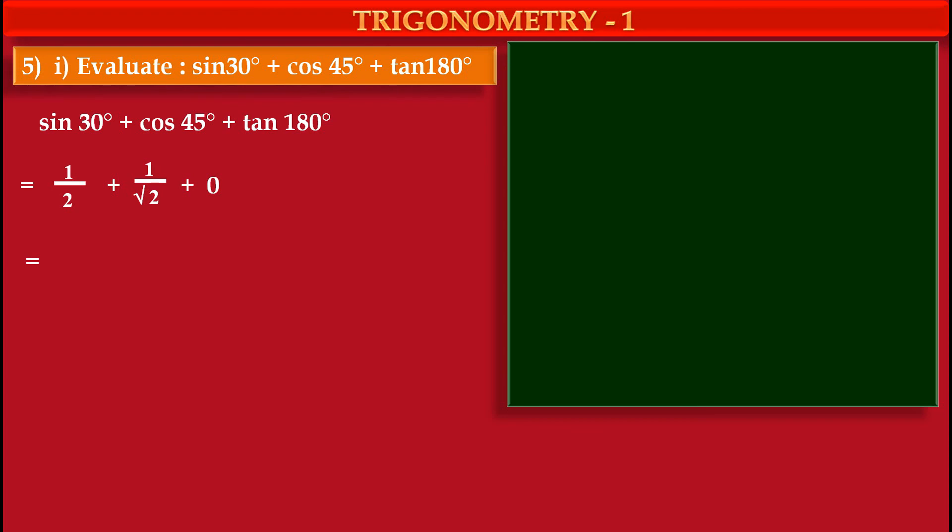So multiplying second term, multiplying its numerator and denominator both by root 2, we get first term 1 upon 2 plus second term root 2 upon 2.